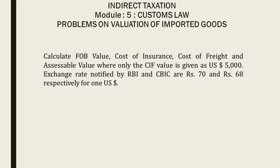The cost of insurance and freight value they have given is five thousand dollars. The exchange rate notified by RBI and CBIC are 70 rupees and 68 rupees respectively. We should take only the CBIC value — that is the Central Board of Indirect Tax and Customs rate — as the exchange rate, that is 68 rupees per one US dollar.